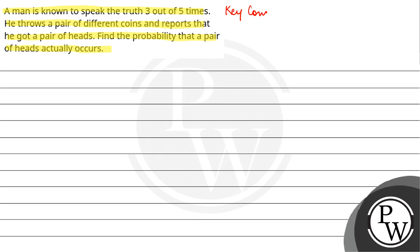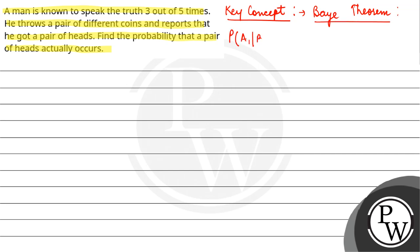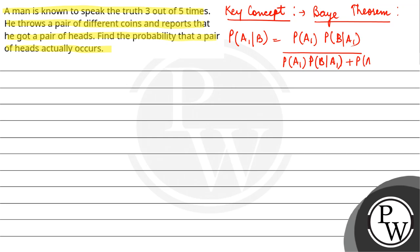Our key concept is Bayes theorem for two events. Probability of A1 given B is equal to probability of A1 times probability of B given A1, upon probability of A1 times probability of B given A1, plus probability of A2 times probability of B given A2.